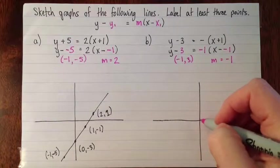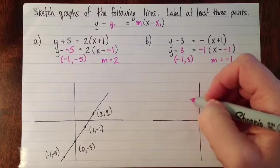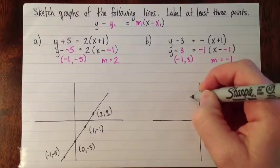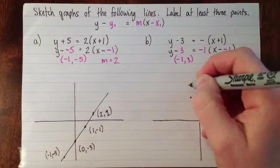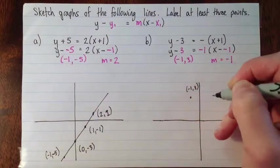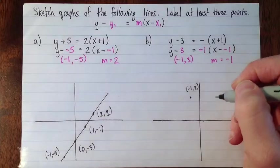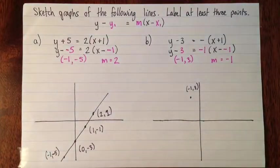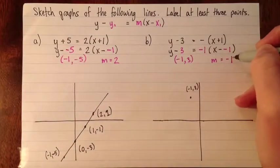Okay, so we'll do a quick sketch. Negative 1, 3. And then my slope is -1, so I'll go over 1 and down 1.